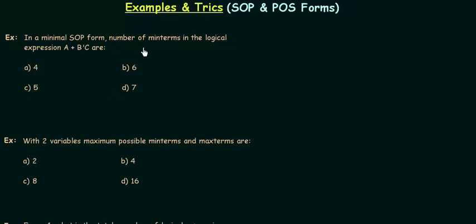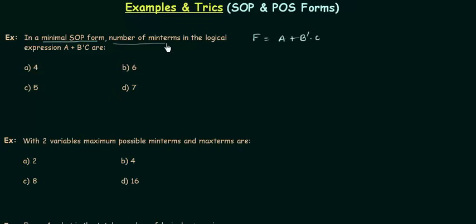In a minimal SOP form, the number of min terms in the logical expression A or (B complement and C) — we have a logical expression for function F equal to A or (B complement and C). This is the minimal SOP form. We want the canonical or standard SOP form so that we may count the number of min terms. So first we find the canonical SOP form from this minimal SOP form, then count the min terms — that will be our answer.